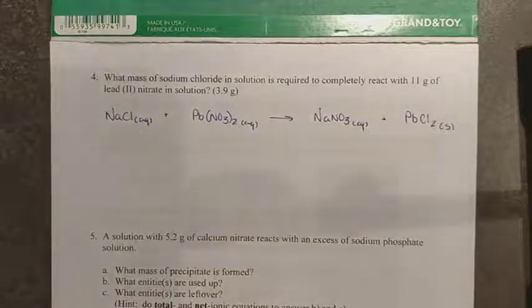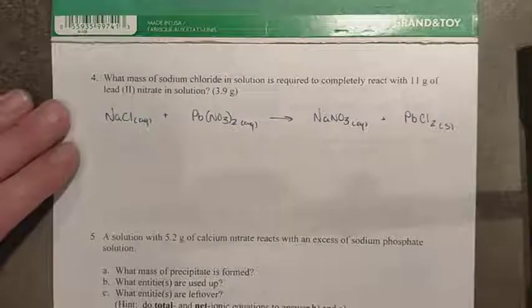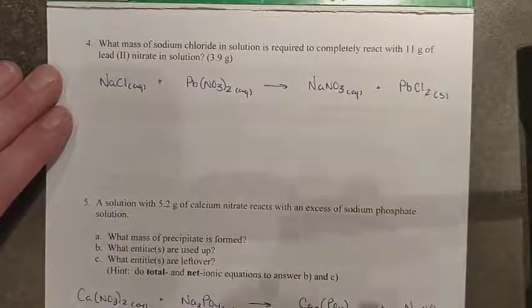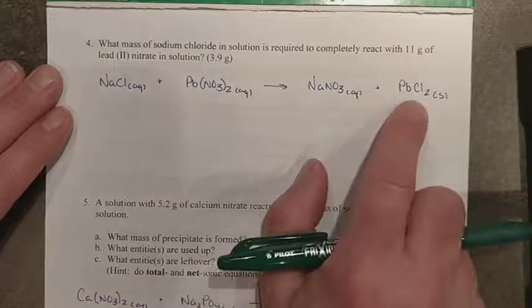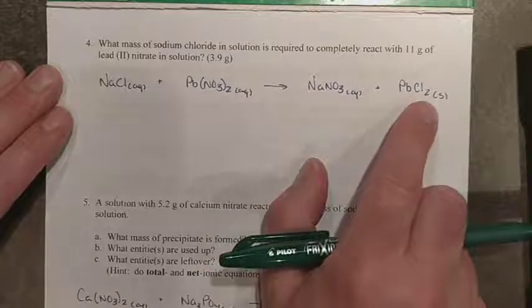All right guys, welcome back. Let's take a look at this one here. Here's the unbalanced chemical equation. You should have come up with NaNO3 aqueous as one of the products and PbCl2 solid as the other product.